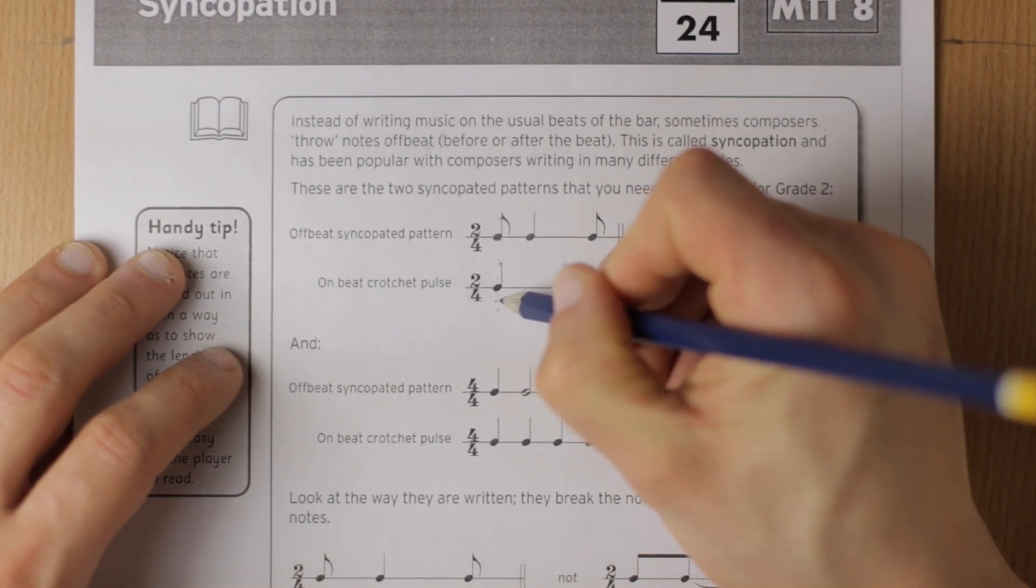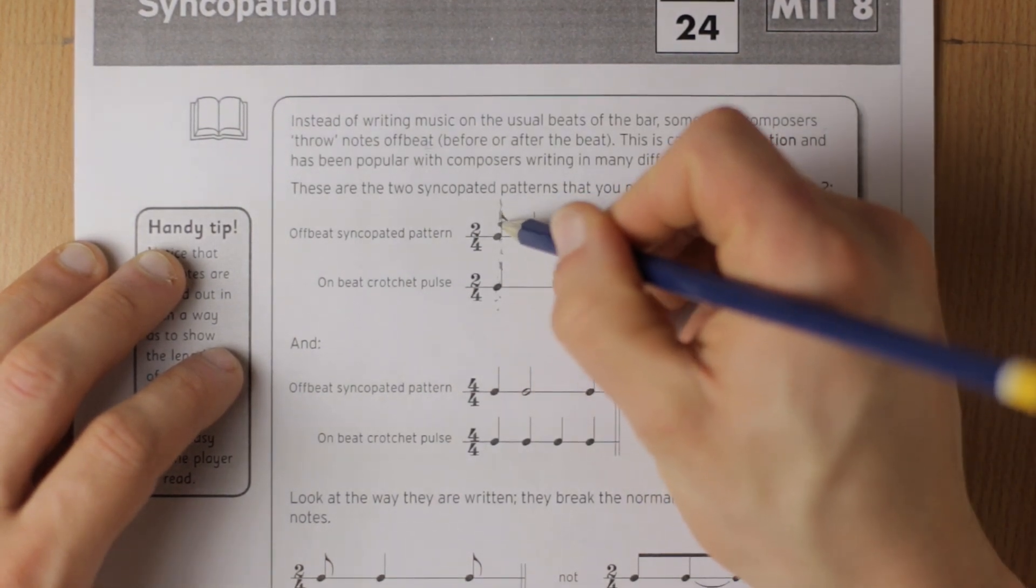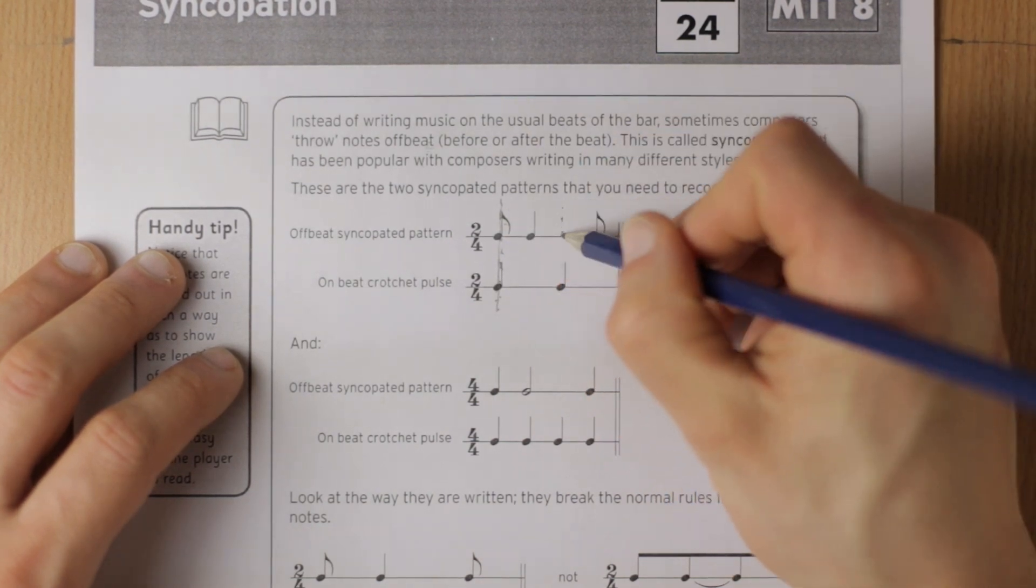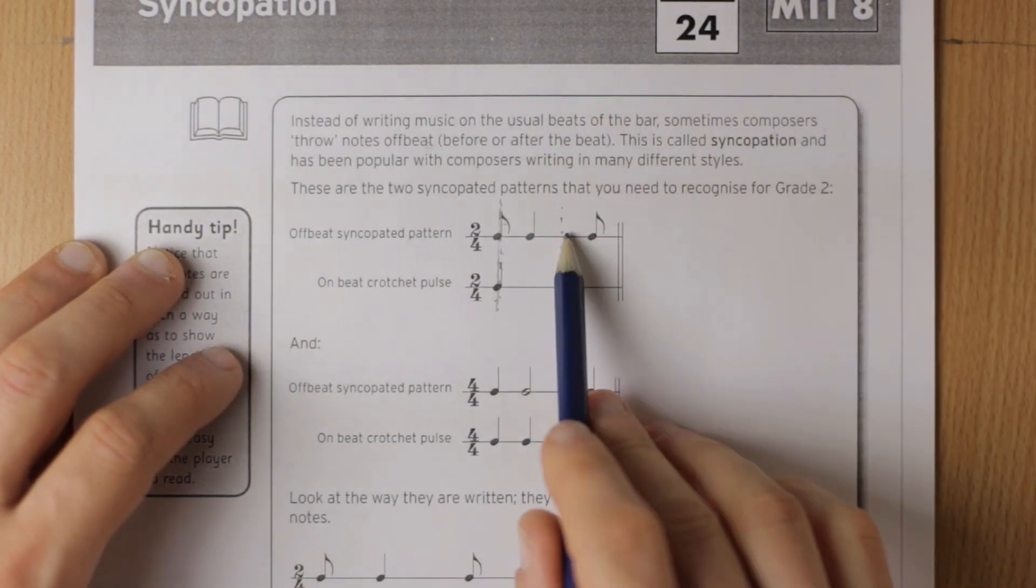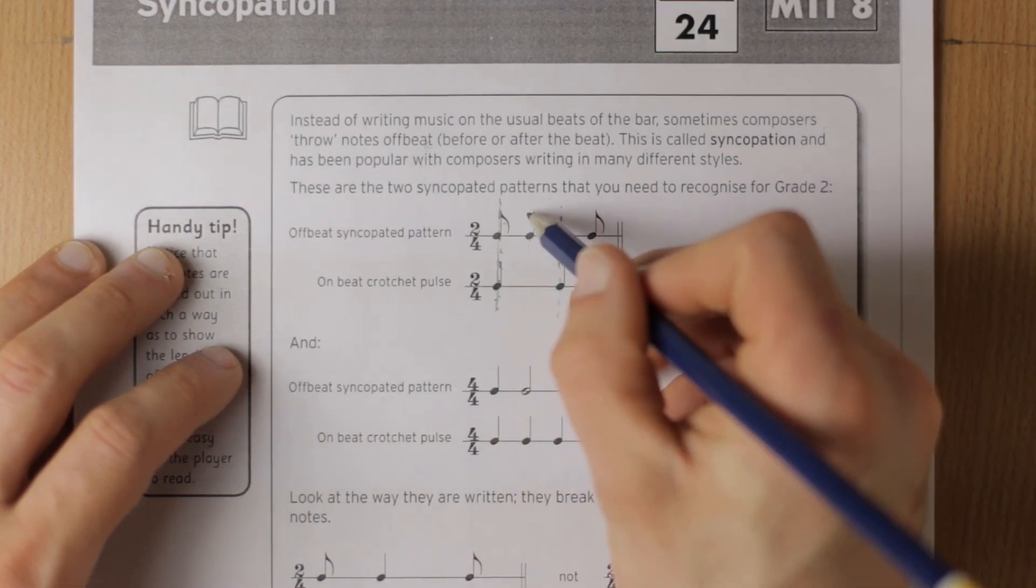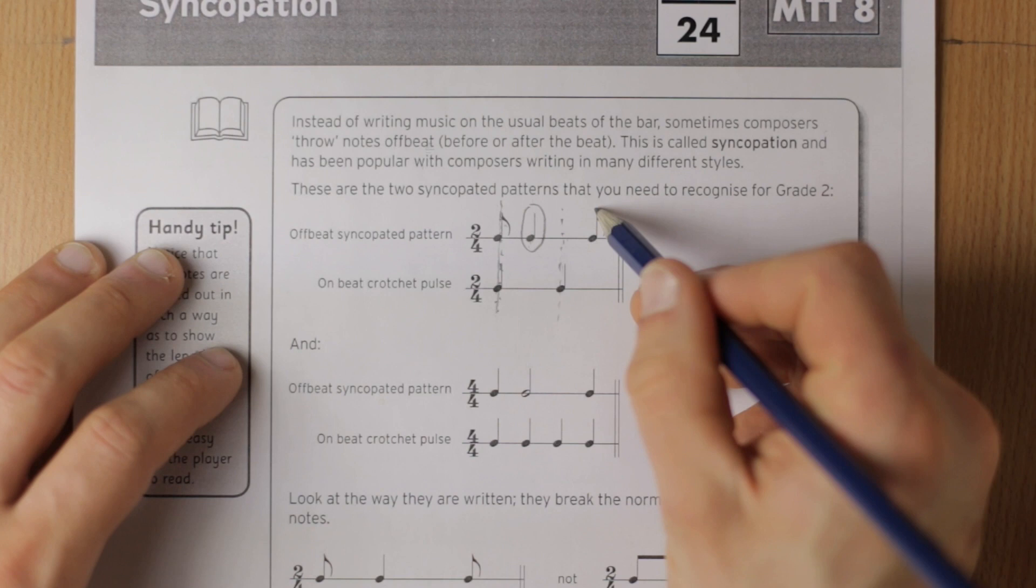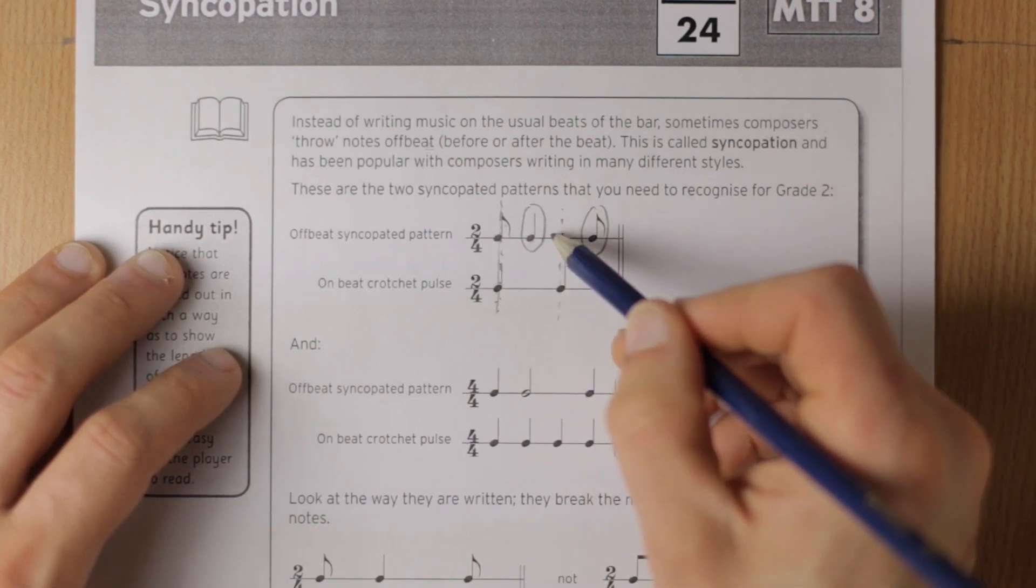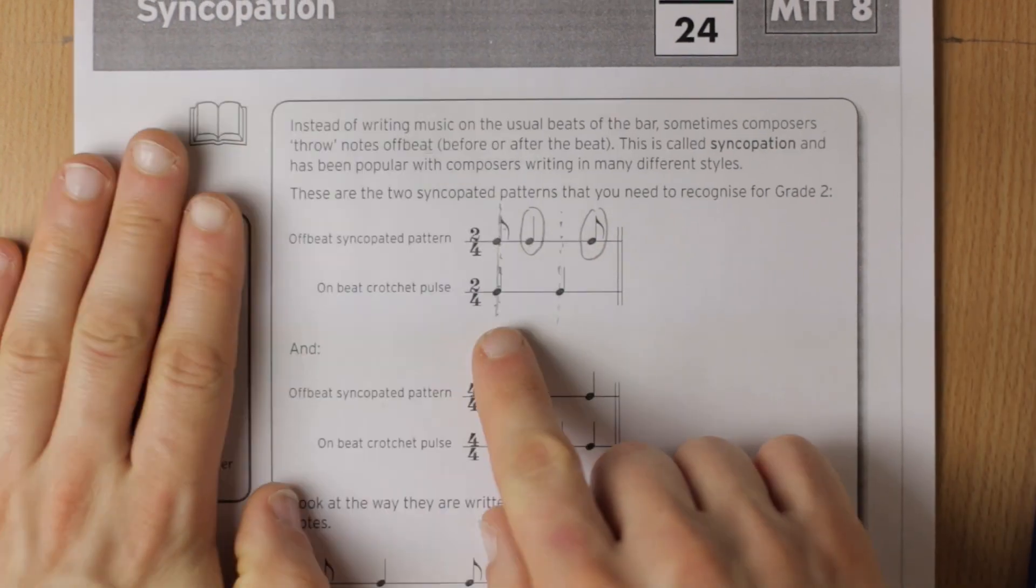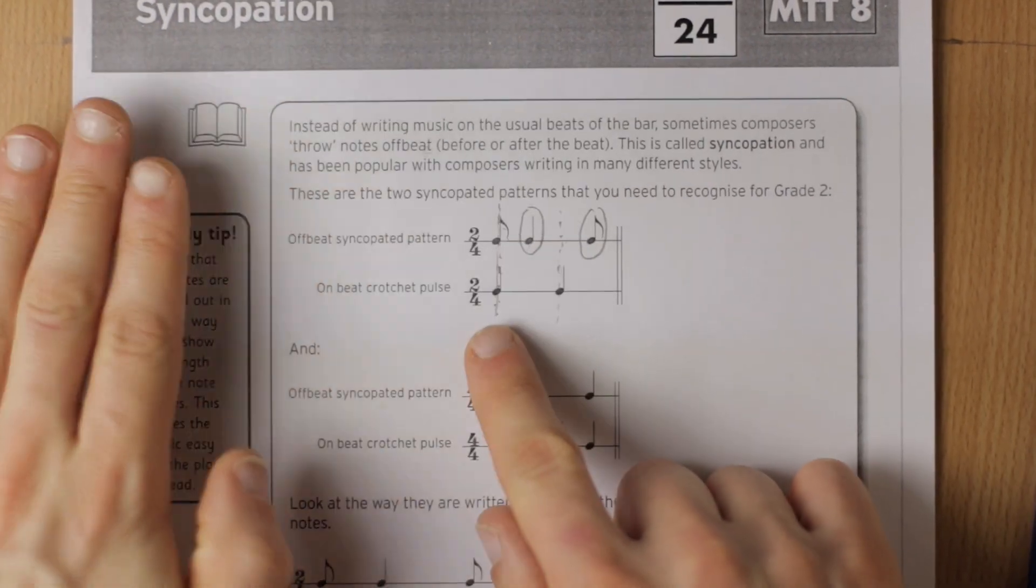If you line those up you can see that the first note here lines up nicely with that first beat, and then our second beat goes here. Now we don't have a note that lines up with that, we've got this note which is an offbeat note. So this note is offbeat and this note is offbeat. So that makes it syncopated, and when we play that, here's the pulse of the onbeat.